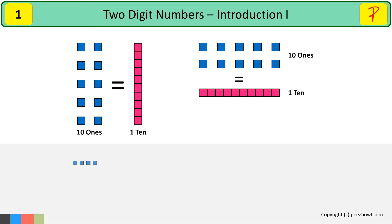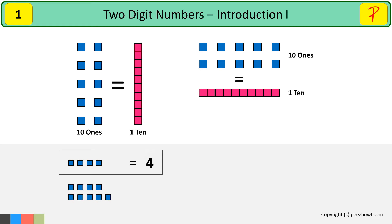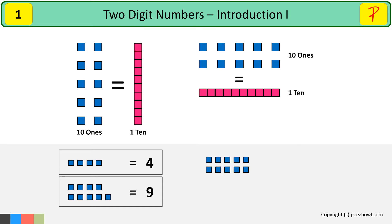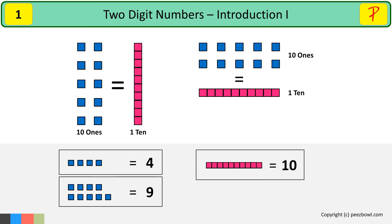For example, if you have four blue squares, then it is equal to four ones, or simply four. When you have nine such blue squares, then that shows the number nine. Now, consider you have ten such squares. In this case, you already know that ten ones make one ten. So we will replace the ten blue squares with one pink line, which is equal to one ten. So this is equal to ten.